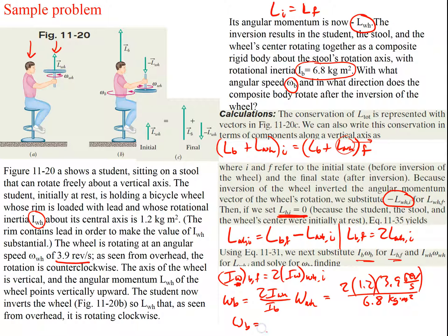Solving this out, we get 1.4 revolutions per second. The units are left in revolutions per second since they cancel consistently. If you wanted to convert to radians per second, you could — just make sure the answer is also in radians per second. That is it for this lecture and the chapter.